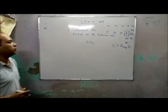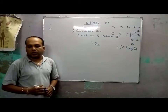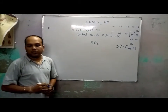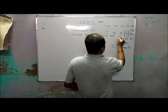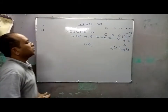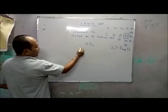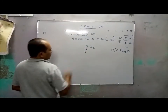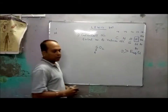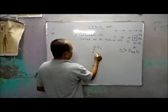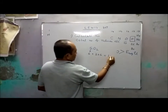Here the central atom will be sulfur. Sulfur belongs to group 16, so it has 6 valence electrons. Oxygen also has 6 valence electrons. So the total number of valence electrons will be 6 plus 12 (for two oxygens), that is 18.